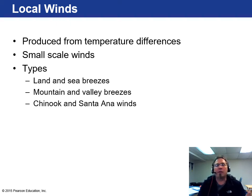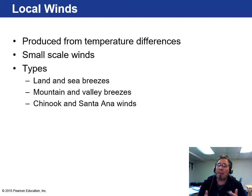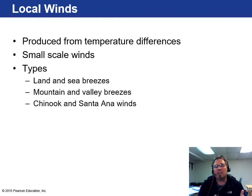Local winds — small-scale winds right around your house — are usually land and sea breezes if you're near the ocean, or mountain and valley breezes. In California, examples include Chinook and Santa Ana winds. These are produced by temperature differences over small scales. Here in Milwaukee, we've had storms where the temperature drops 20 to 30 degrees in a matter of minutes, with a gust front and very high winds. The strongest thunderstorms are fast-moving with a very narrow pressure gradient, bringing winds of 50 to 60 miles per hour or even higher.